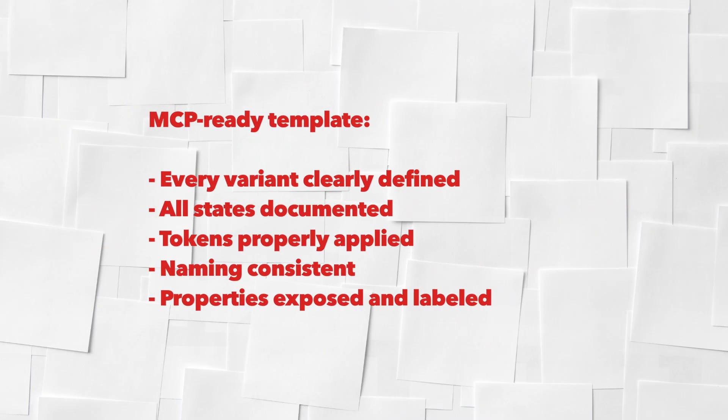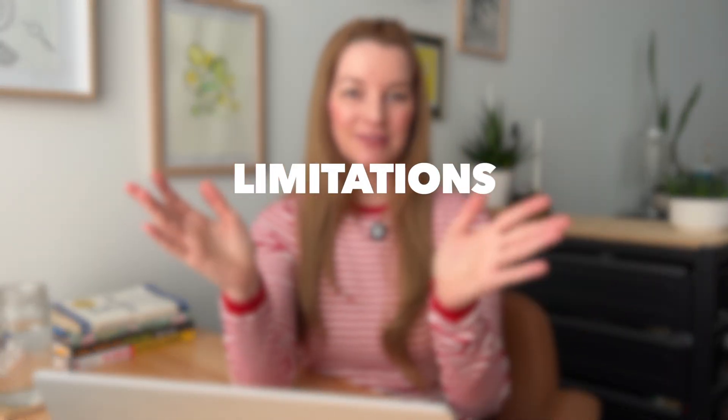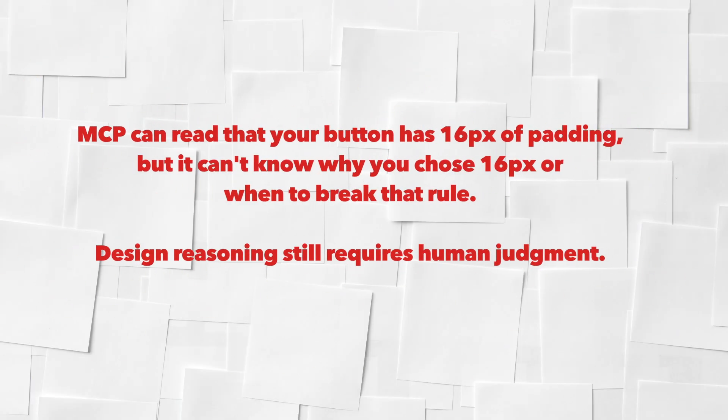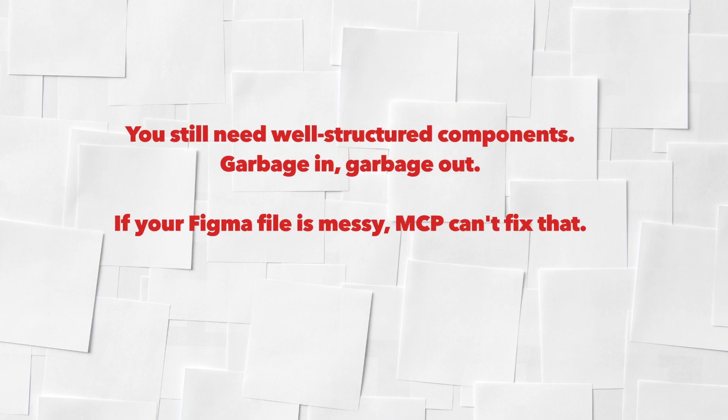Step four, which you can do today or tomorrow: start small with just one component. Pick your primary button component and make it bulletproof — clearly define every variant, all states documented, tokens properly applied, naming consistent, properties exposed and labeled. This is your MCP-ready template, and when MCP matures, you will be ready to scale. Now the limitations: MCP is not a holy grail yet. It doesn't understand design intent — MCP can read that your button has 16 pixels of padding, but it cannot know why you chose 16 pixels or when to break that rule. Design reasoning still requires human judgment.